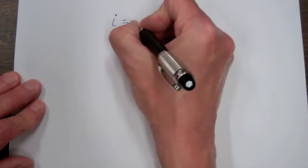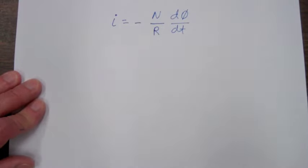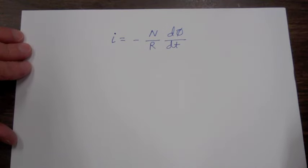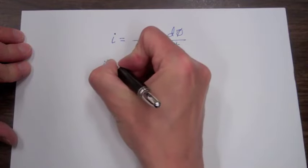And to complete our equation I am going to put a minus sign right here. Let's multiply both sides of our equation by R.